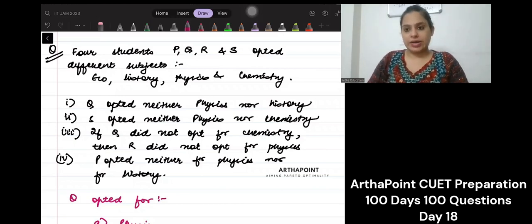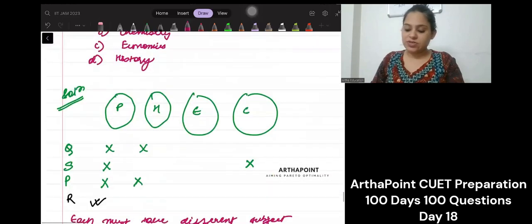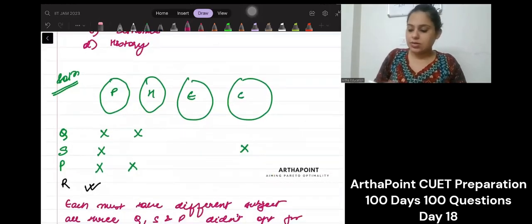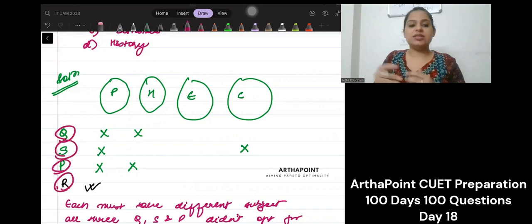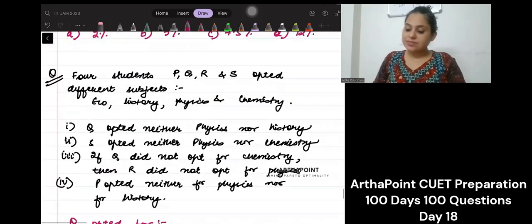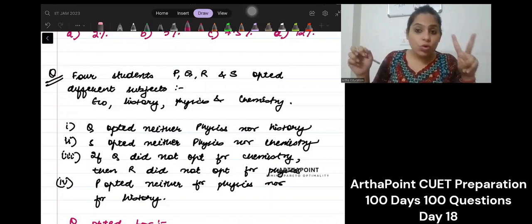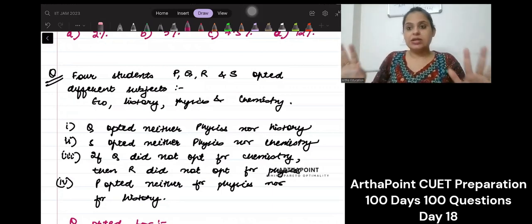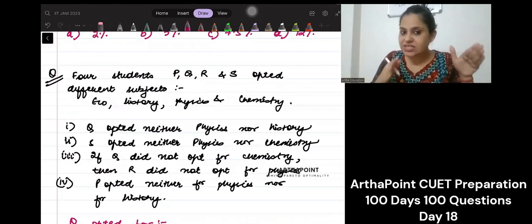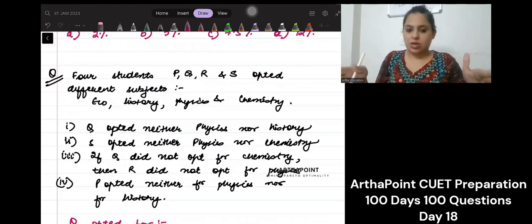Four students P, Q, R and S opted different subjects. So what I have done is I have written P, Q, R and S here. They are opting different subjects. It says no two students - it means that each of them has to take a different subject. So no two of them can take the same subject. First of all, let's clear that if P takes E, then Q, R and S cannot take E.